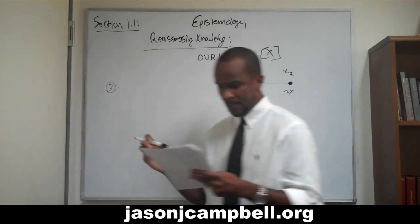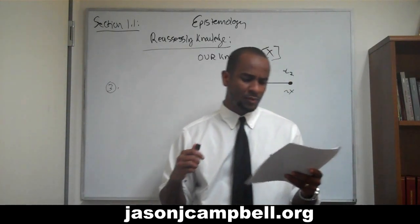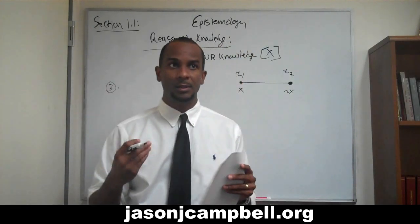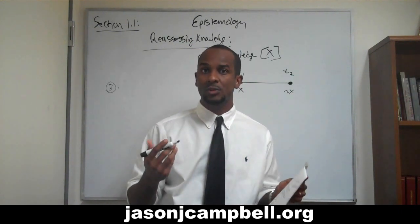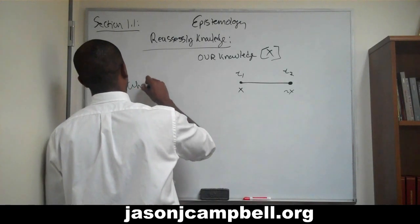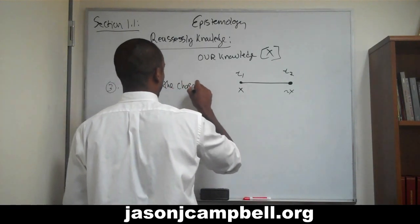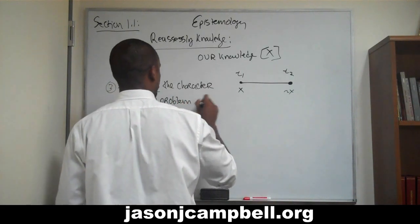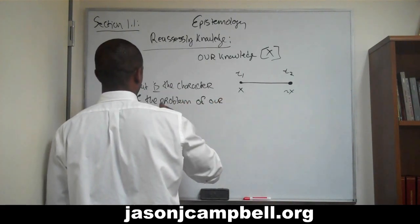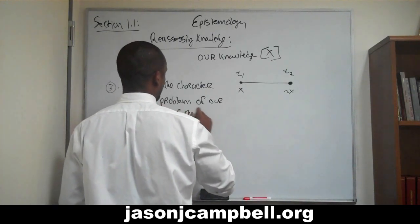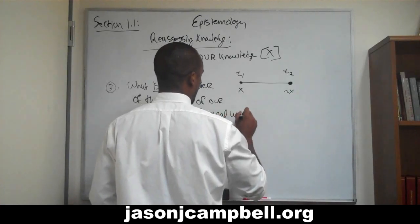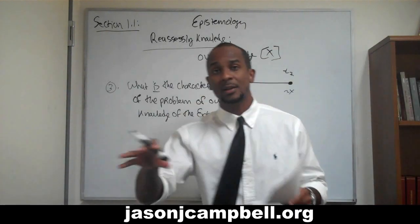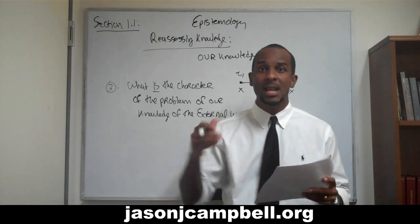Number three: the author wants to understand, quote, 'what exactly the problem of our knowledge of the external world amounts to.' Stroud's — Barry Stroud's — attempt is to make sense of what exactly does it mean to say that there is a problem of the external world. What is the character of the problem of our knowledge of the external world? What exactly is the nature of that problem, and how do we come to understand it?